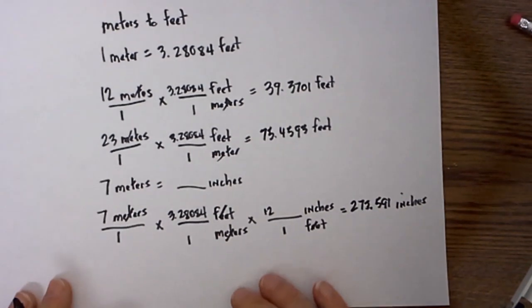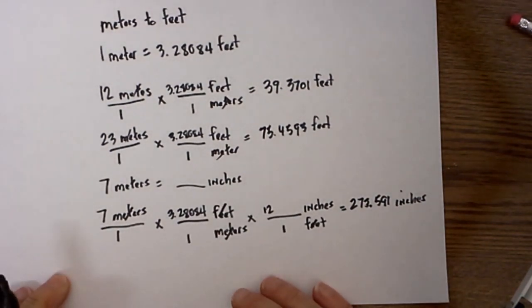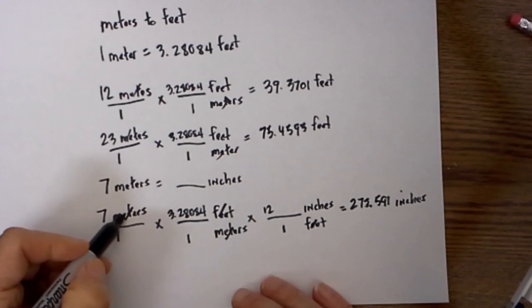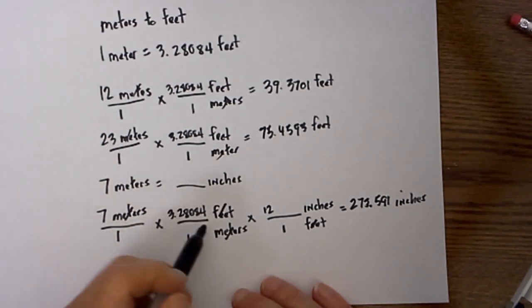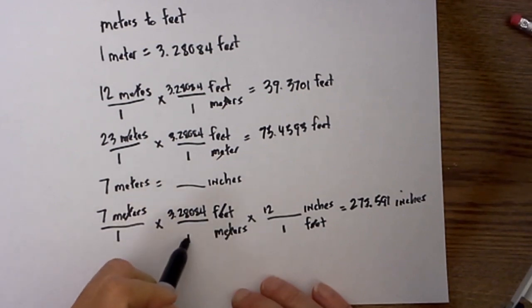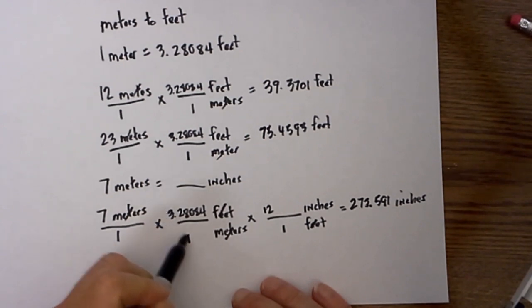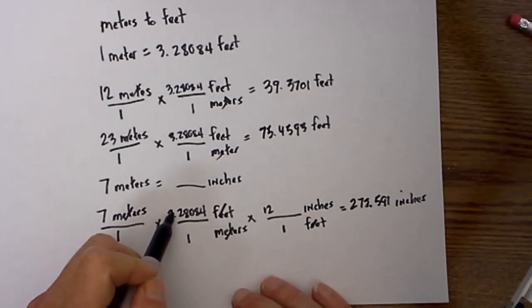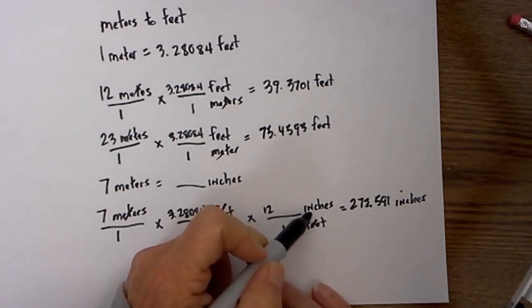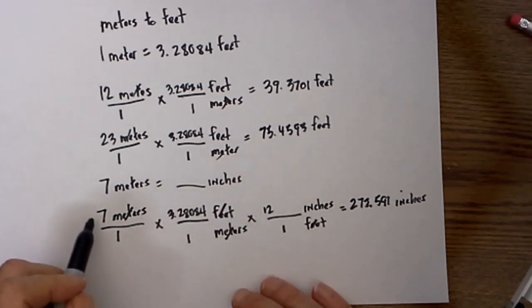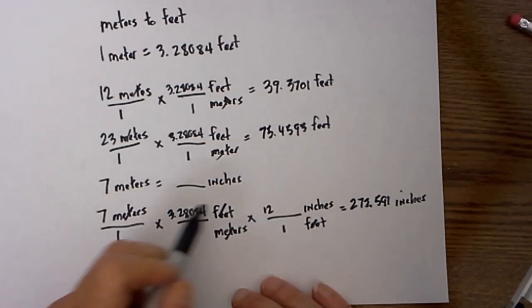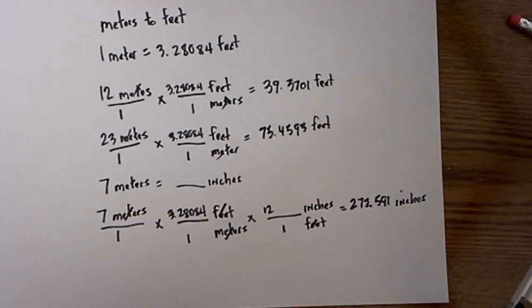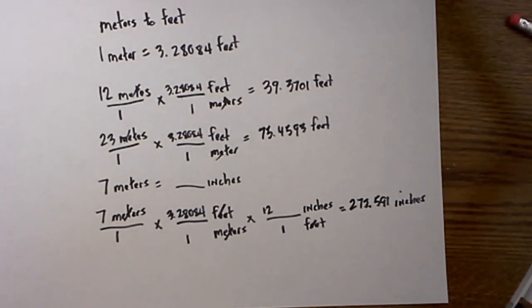Once you learn the technique you really can convert anything. Let's do a quick recap: place what is given over 1, put the unit of measure you are converting to on top, what is given on the bottom, ask which is larger. 1 meter is larger, so place 1 meter equals 3.28084 feet. Cancel your units of measure, multiply straight across, and there is your answer. Thank you so much for watching, hope this helps. Remember, MooMooMath uploads a new math video every day.